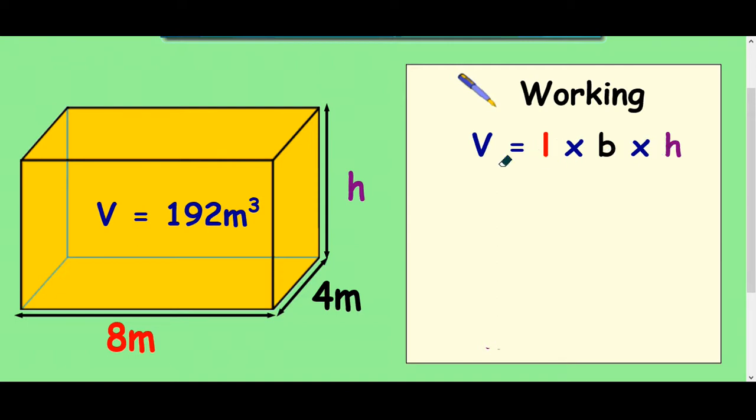And the strange thing is we're going to put a number in this side this time because we know the answer to the volume is 192 so that's where that would go. Now we also know that the length is 8 and the breadth is 4. It's the height that we don't know so we're just going to leave that as h.